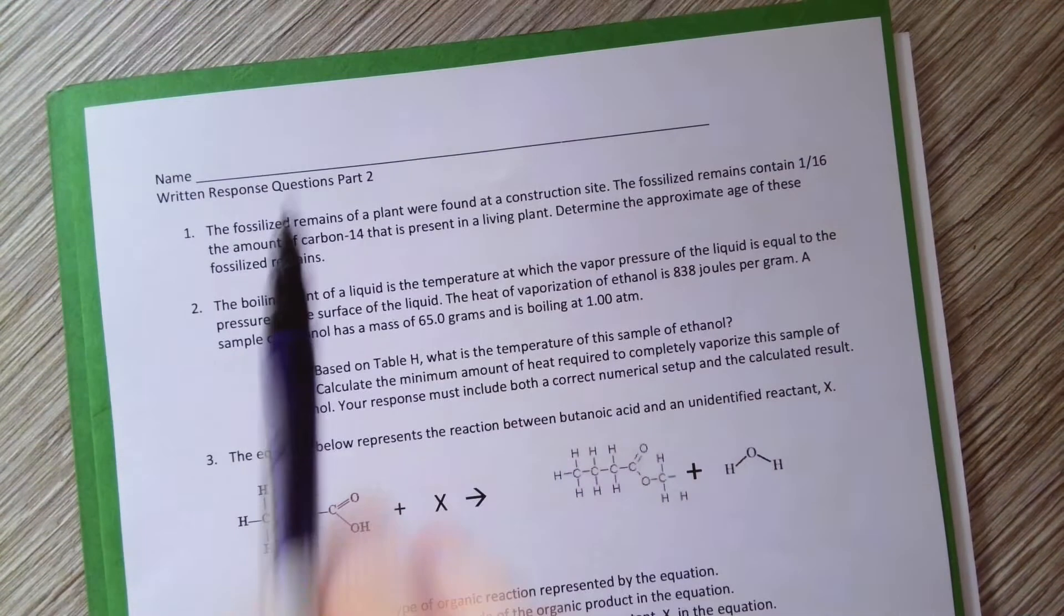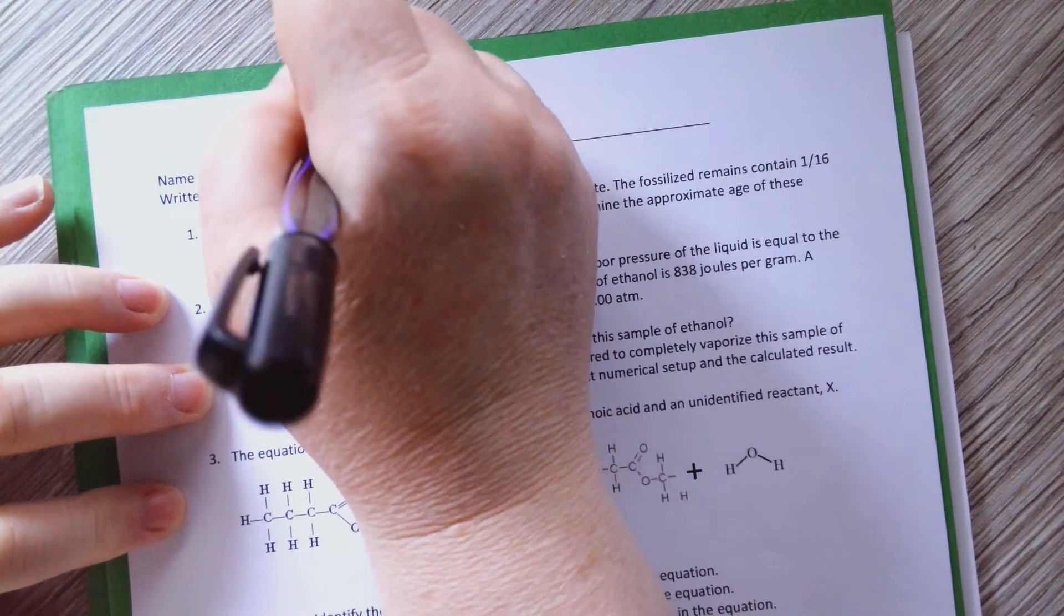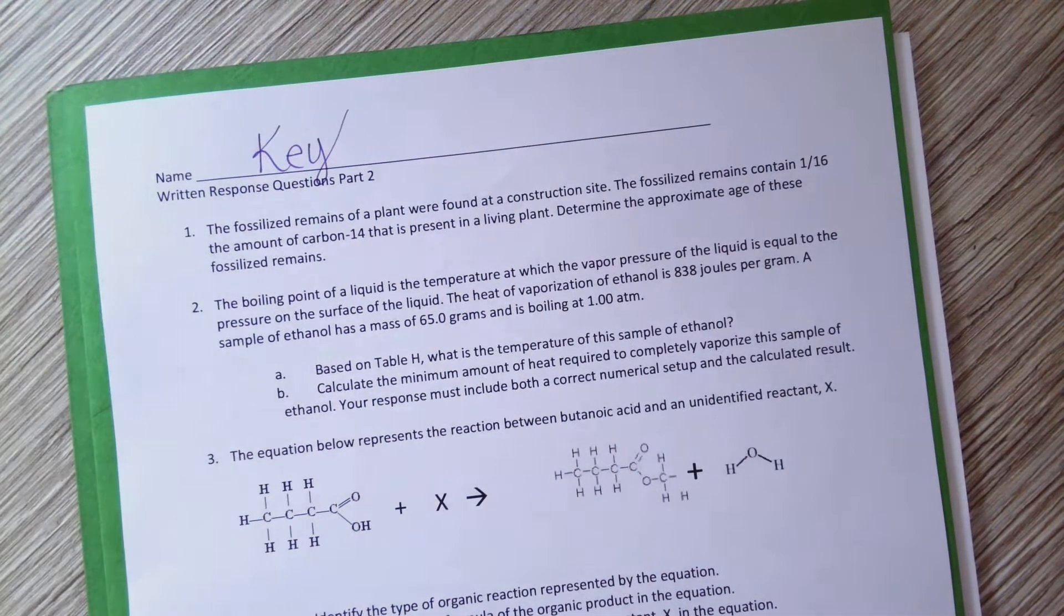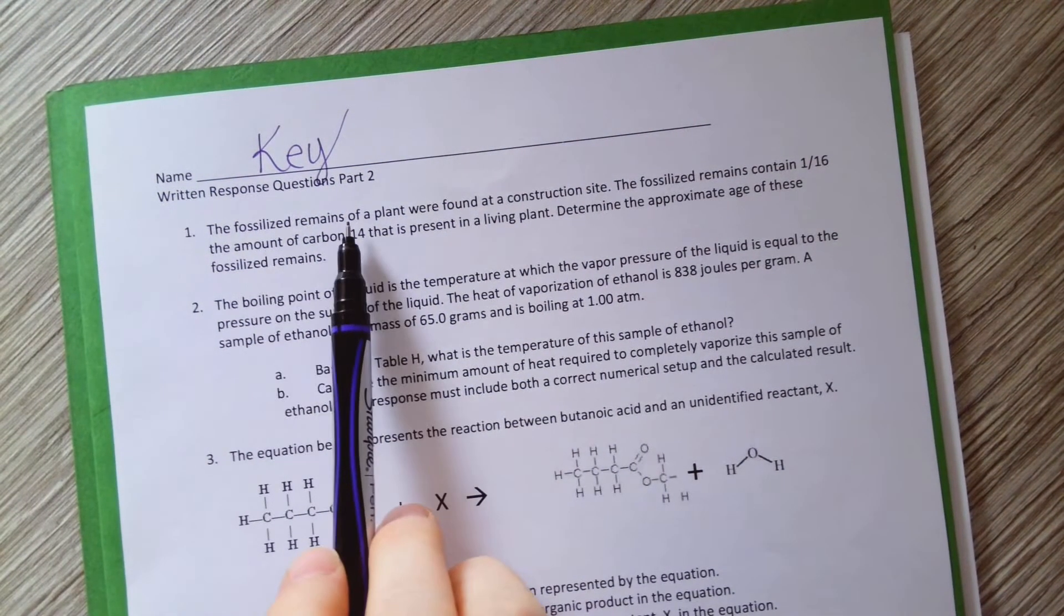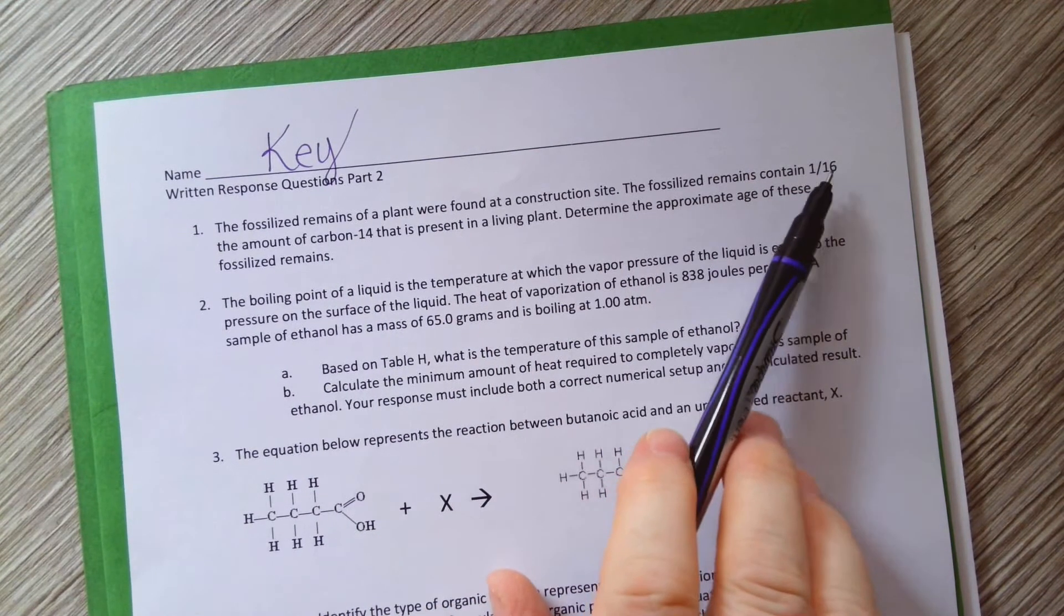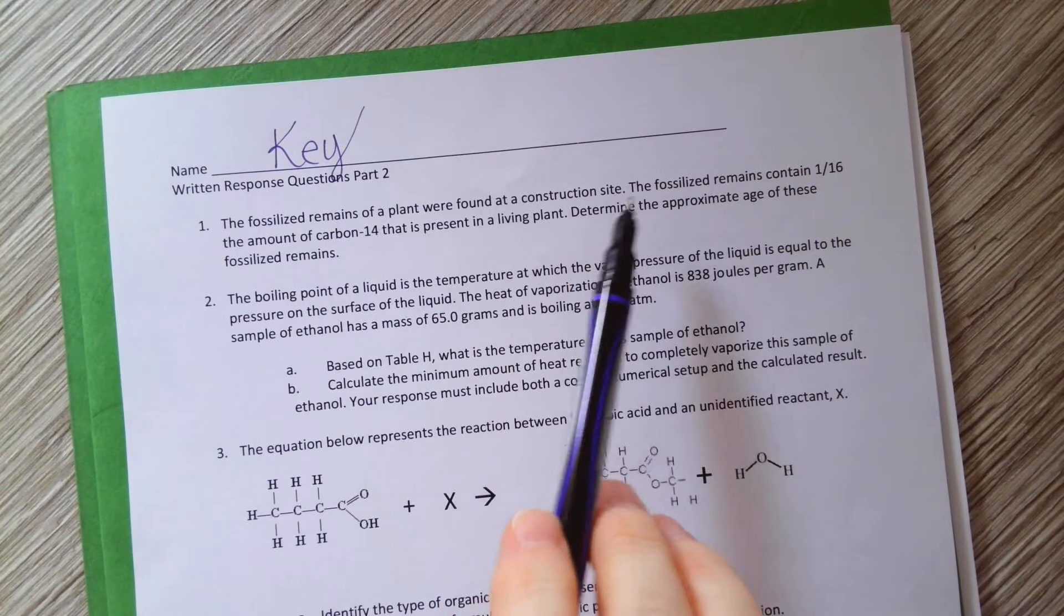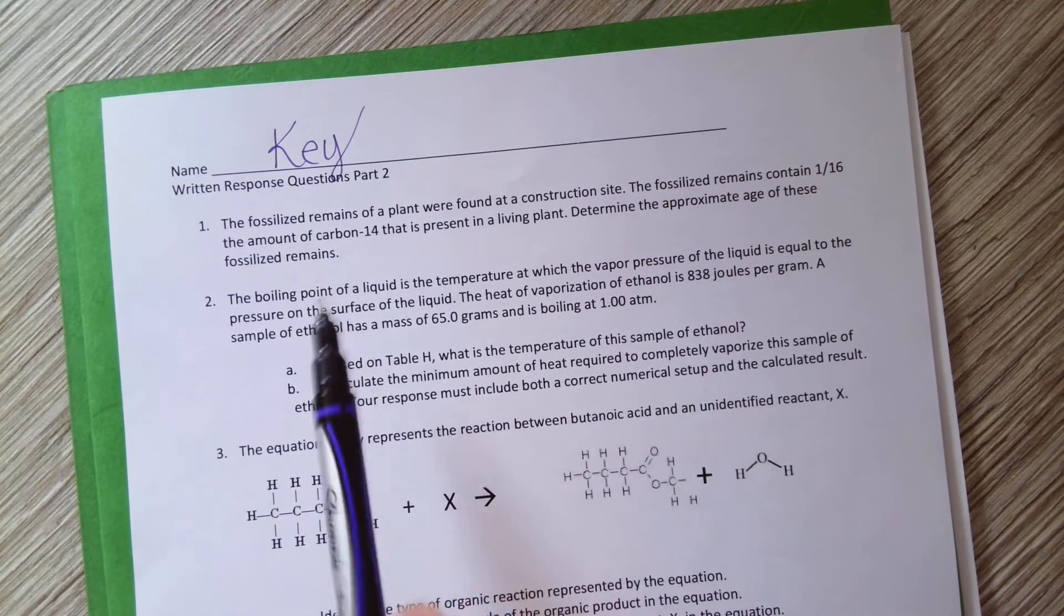Okay, we are going to look at written response questions part two and here is our key. So fossilized remains of a plant were found at a construction site. They contained one-sixteenth the amount of carbon-14. Determine the approximate age of these fossilized remains.